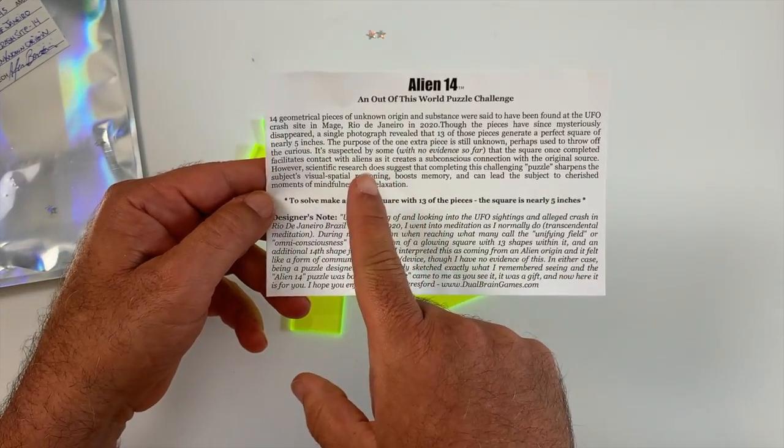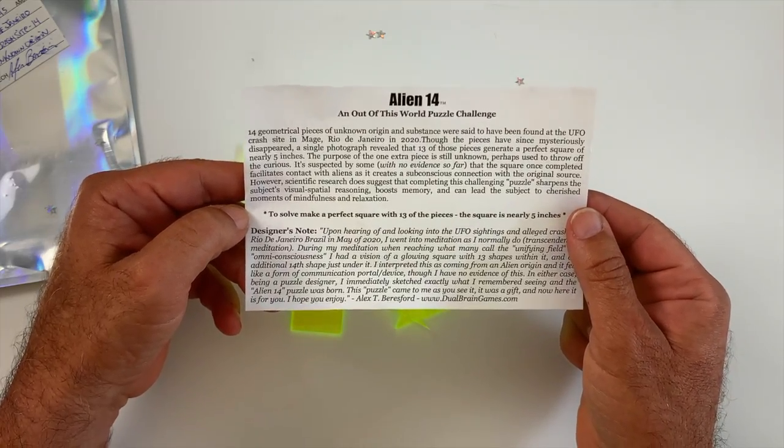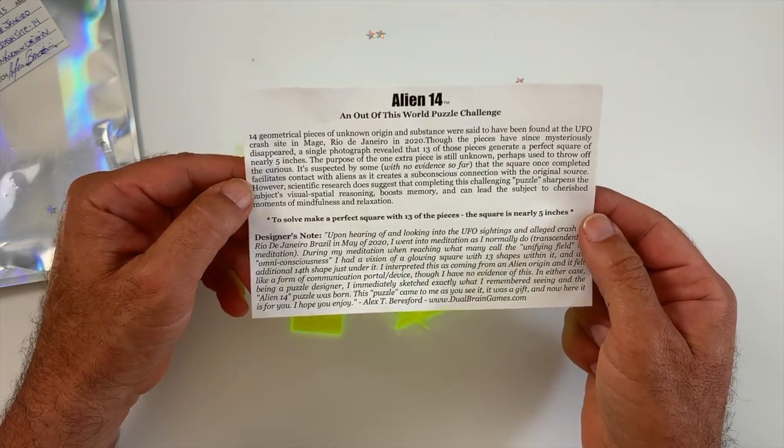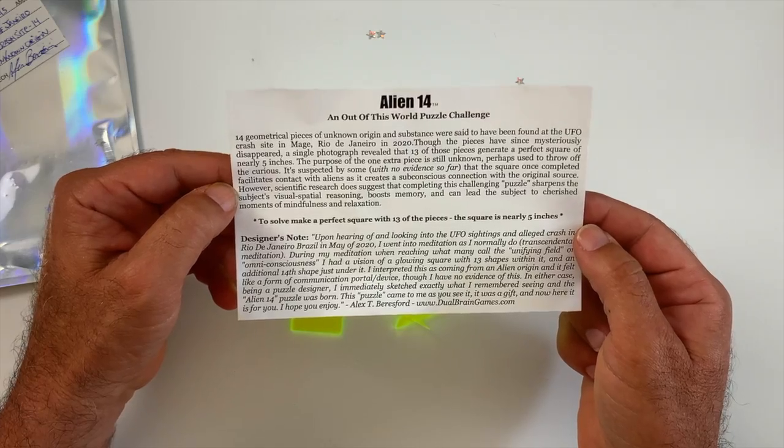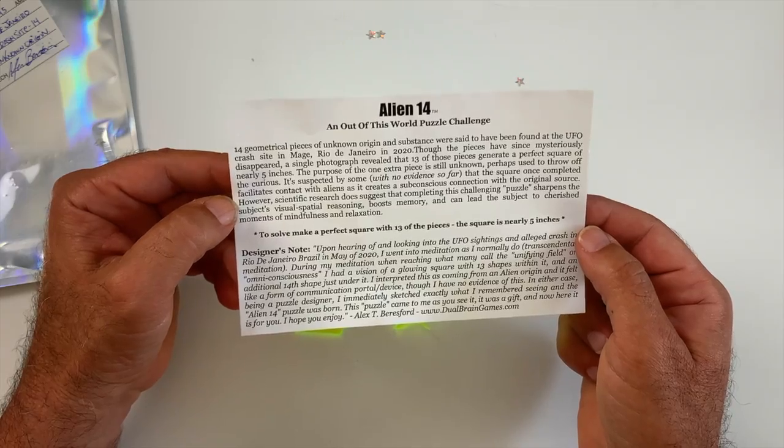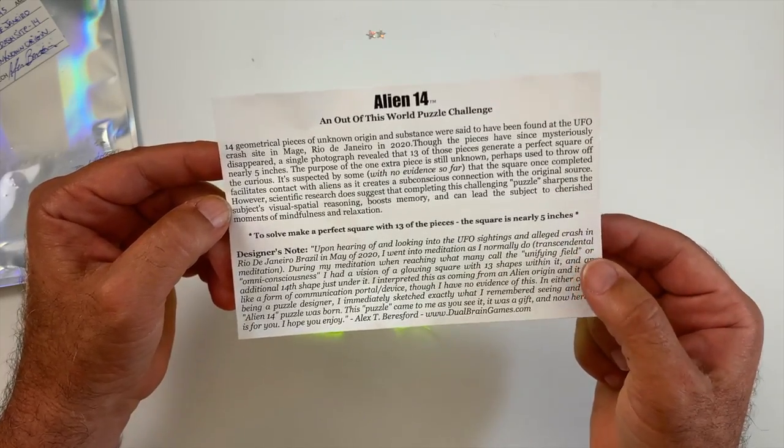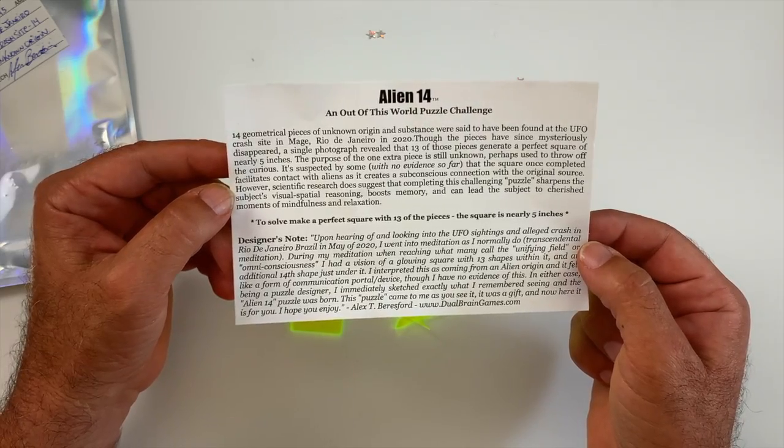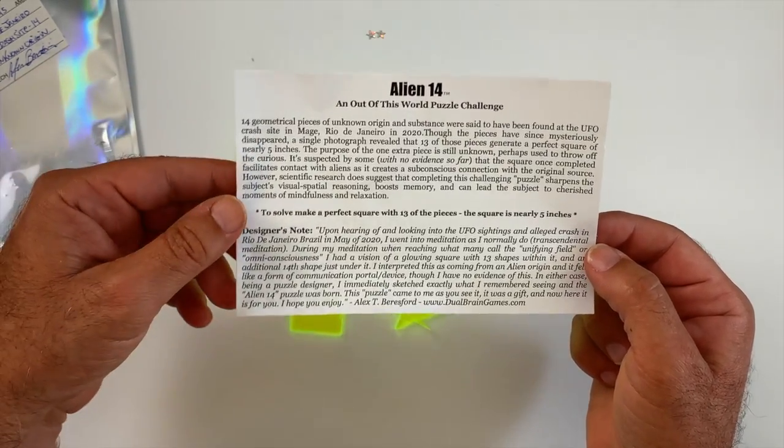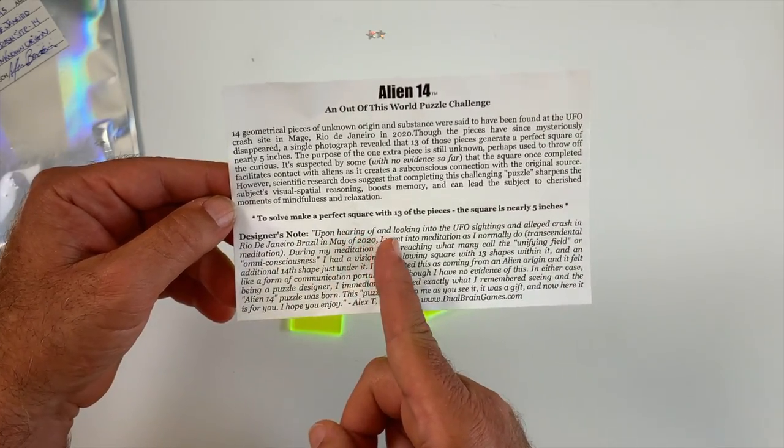14 geometrical pieces of unknown origin were said to have been found at the UFO crash site in Rio de Janeiro in 2020. Though the pieces have since mysteriously disappeared, a single photograph revealed that 13 of those pieces generate a perfect square of nearly 5 inches, and the purpose of the one extra piece is still unknown. So there's the theme for this thing: to solve it you make a perfect square.